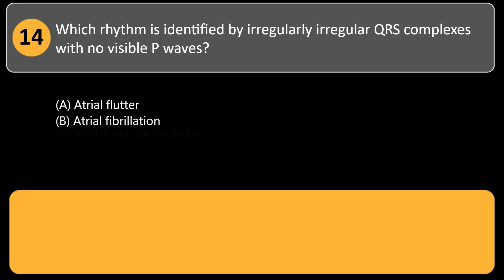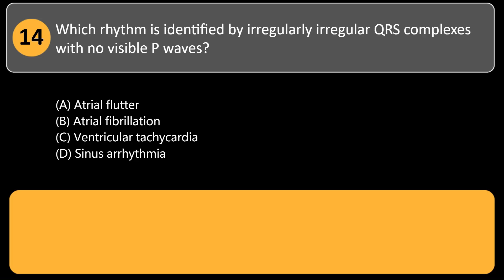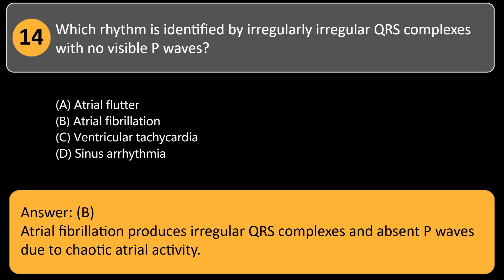Which rhythm is identified by irregularly irregular QRS complexes with no visible P-waves? A. Atrial flutter. B. Atrial fibrillation. C. Ventricular tachycardia. D. Sinus arrhythmia. Answer: B. Atrial fibrillation produces irregular QRS complexes and absent P-waves due to chaotic atrial activity.